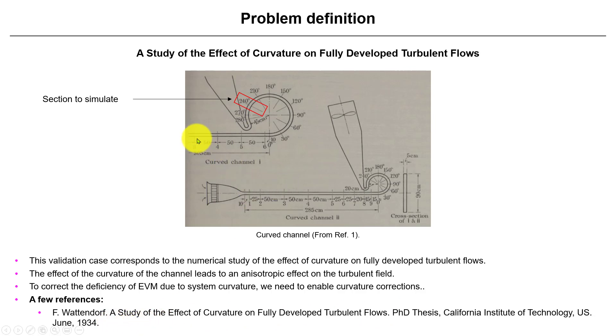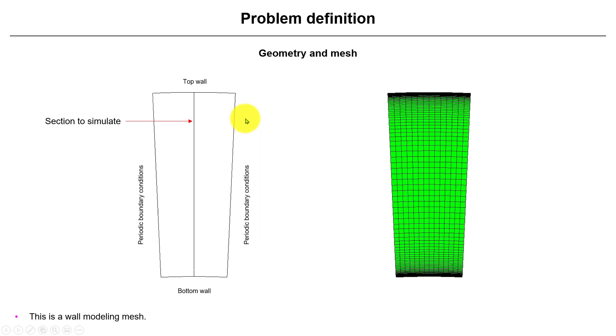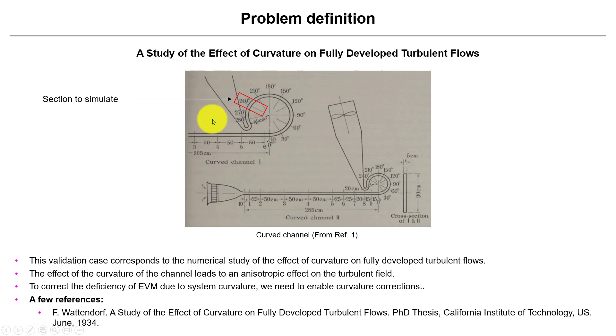So basically what we have here is this one. This will be kind of geometry equivalent to geometry curvature. So see that we have the channel and basically we're taking a section here. You have the influence of the curvature and we're going to compare with the experimental results. So it's clear that the velocity profile will be influenced by this curvature.